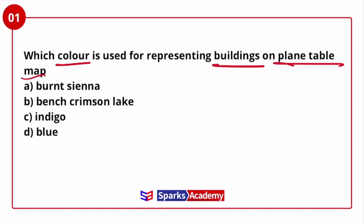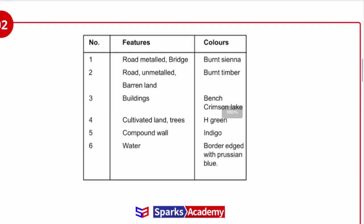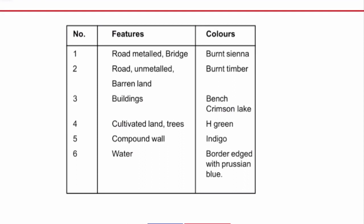Buildings are represented based on colour variations. For example, a metal road — meaning a road made of stone, cement or similar material — is represented by one earthen colour shade. Different features have different colour variations on the plain table map, so remember each colour for each feature.